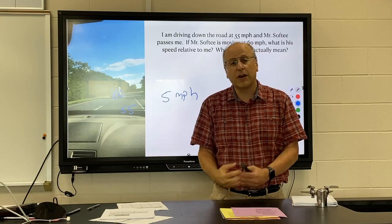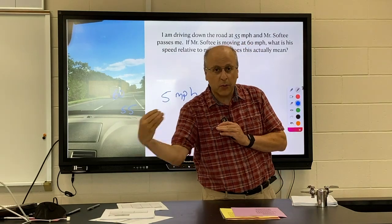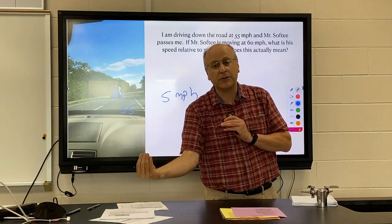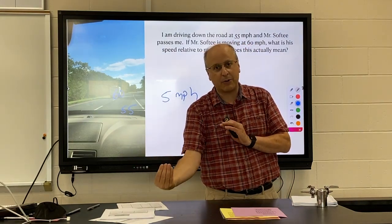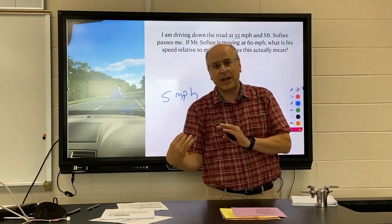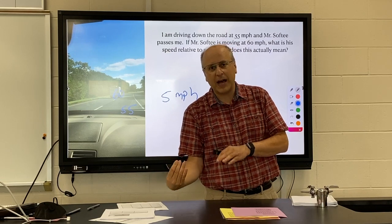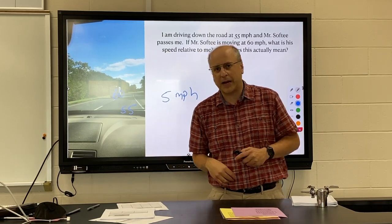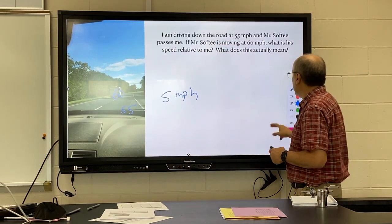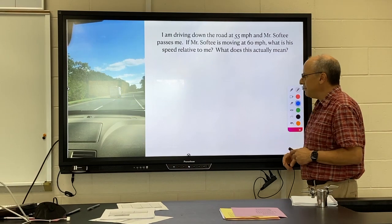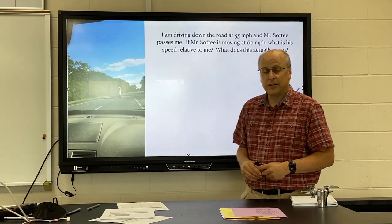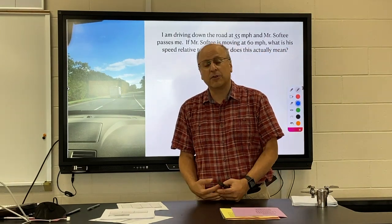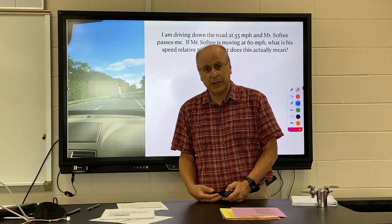That means Mr. Softee is pulling away from me at 5 miles every hour — every hour that goes by, he pulls ahead by another 5 miles. So when moving in the same direction, you subtract to get your relative speed.